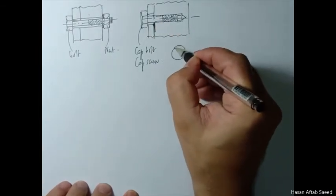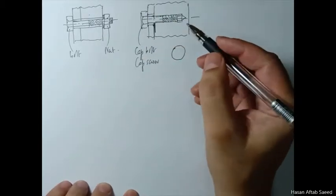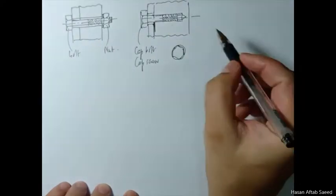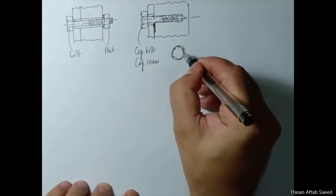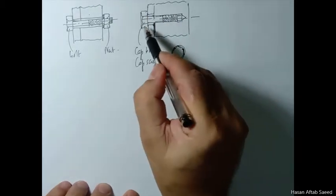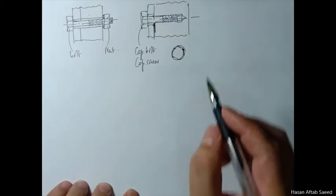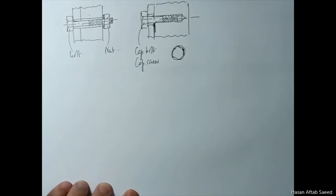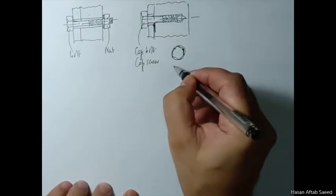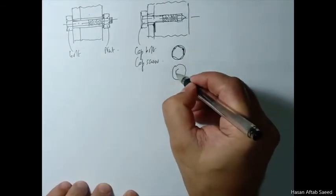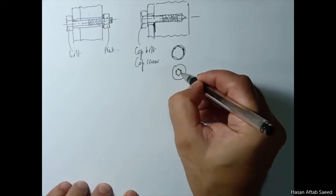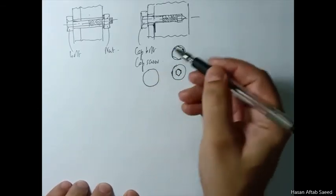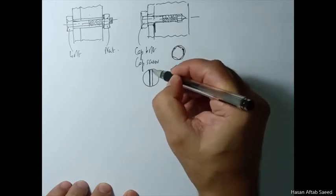For the cap screw you have to tighten the bolt itself since there is no nut. Different head shapes are available: one looks similar to a bolt head (with a slightly smaller height), another has a hexagonal socket for an Allen key, and another has a traditional screwdriver slot. There are many other variants as well.